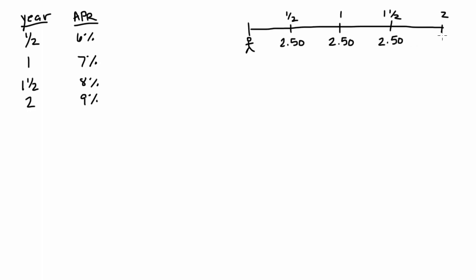And then at year two, at that final terminal cash flow, we'll receive that final coupon plus the face value. So our entire cash flow will be $102.50.